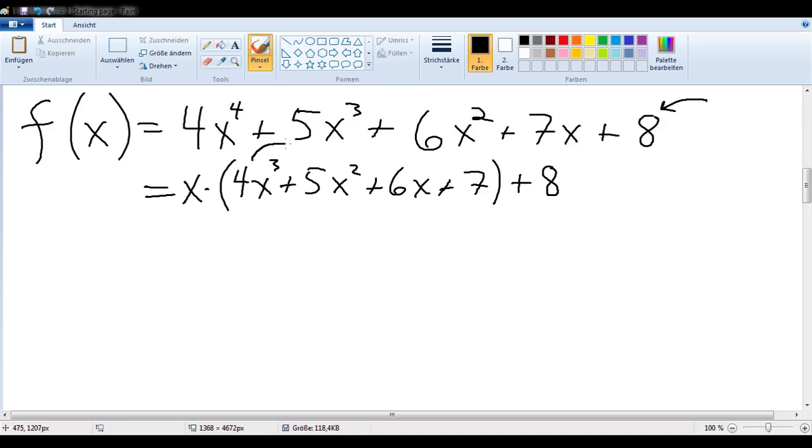Now if we look at this part here, again we see we could factor out an x, where this 7 does not play a role. So we could just take another step, x times, x times, we'd have 4x squared plus 5x plus 6, and we have to add our 7 in here, right, just plus 7, and then plus 8.